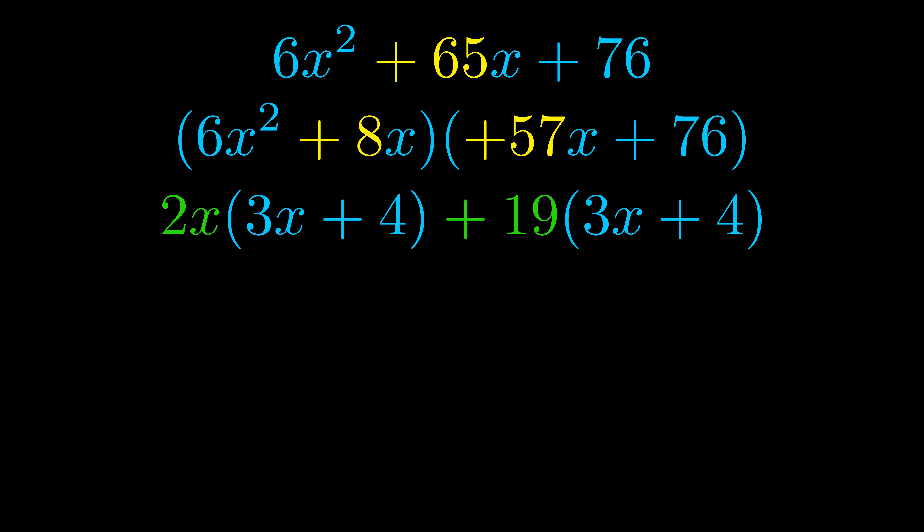Notice also how what remains inside of the parentheses is the same in both cases. The blue values are the same. Those blue values will become one of our factors and we will combine the two green values, the GCFs that we pulled out, to get the other one.